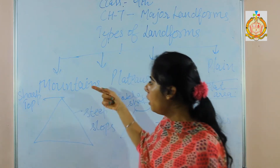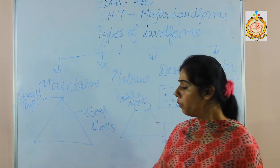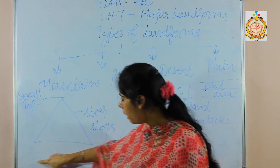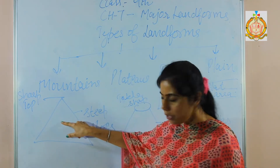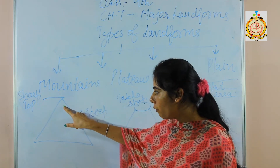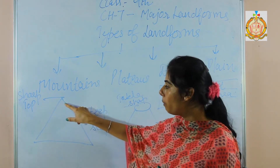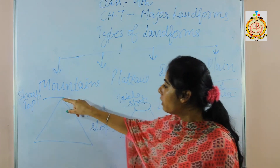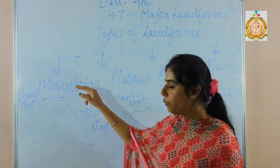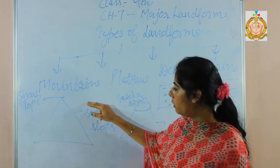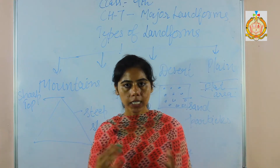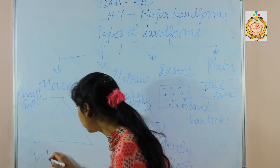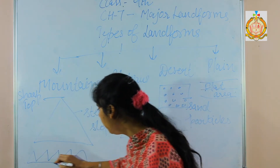Firstly, we will discuss about mountains. Mountains are natural elevations from the earth's surface. The base is the earth surface, it has a sharp top and slopes are very steep, meaning slanting slopes. Mountains are usually arranged in a line, which is called a range.